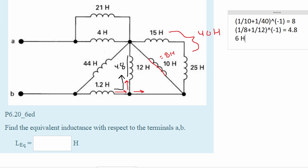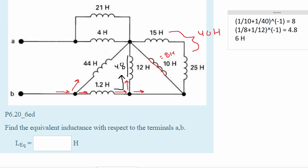Now this 6 Henrys is in parallel, because if we run current through this way some of it goes up and some of it goes the other way, with our 44 Henry inductor. Plugging this into the parallel formula for inductance, we get 5.28 Henrys.